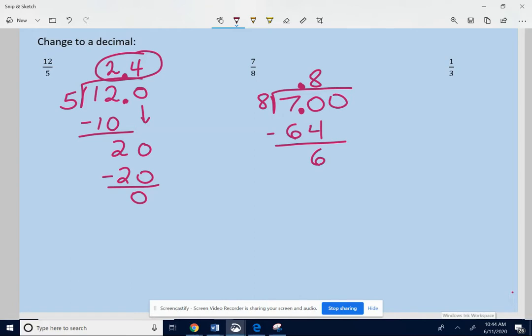So we need to bring down a 0. 8 into 60. Let's see. 8 times 7 is 56. I think that's the closest we're going to get. So subtract 56 from 60. We get 4. Bring down another 0. 8 into 40 goes exactly 5 times. So we are done. It's 0.875.